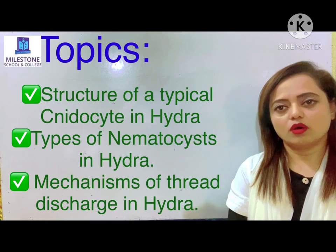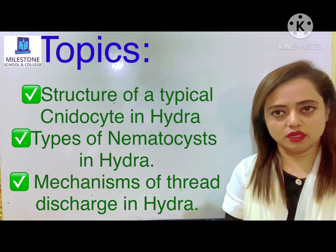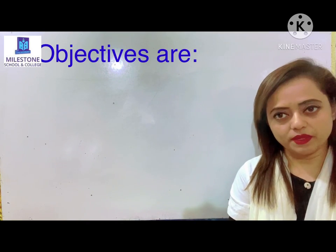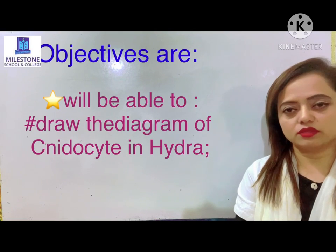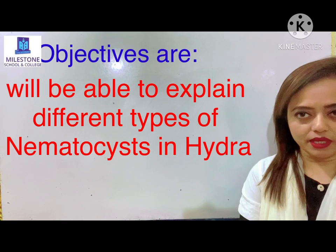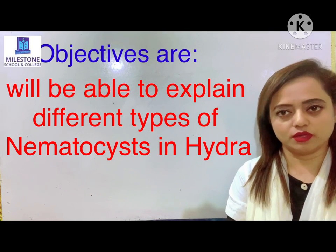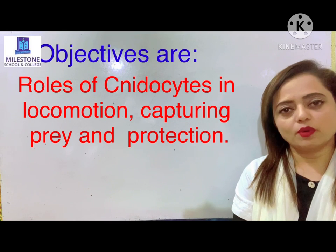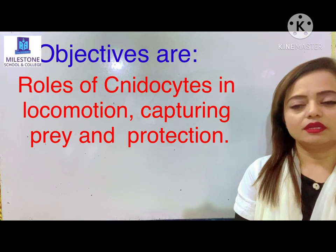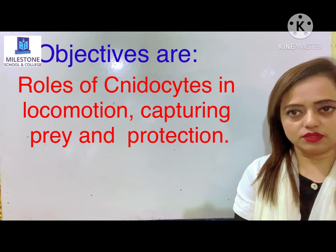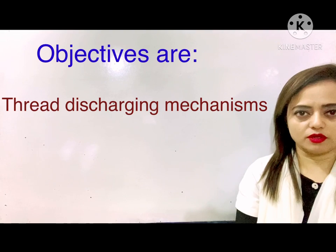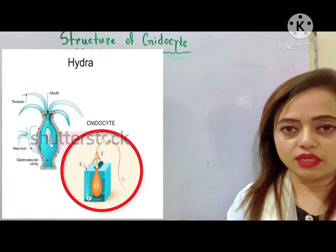Today's topics are: structure of a typical nematocyst in Hydra; types of different nematocysts in Hydra; and the discharging mechanism of the nematocyst thread in Hydra. The objectives are: we will be able to draw the diagram of the typical nematocyst, explain the different types of nematocysts found in Hydra with their specific roles, explain the importance of nematocysts in locomotion, prey capture, or defense, and learn the mechanism of thread discharge in nematocysts of Hydra.